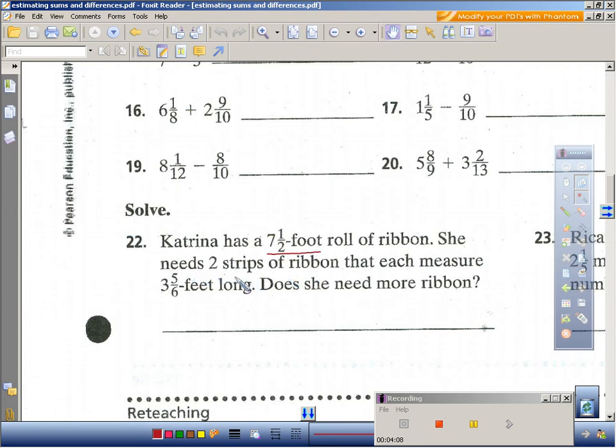First of all, we know that she has seven and a half foot roll of ribbon. She needs two strips of ribbon to each measure three and five-sixths feet. Well, there's two of these, right? So three and five-sixths plus three and five-sixths. There's one strip, two strips. Well, let's benchmark these things. Five-sixths could be benchmarked as one whole. This fraction here, because the numerator is just one less than the denominator.